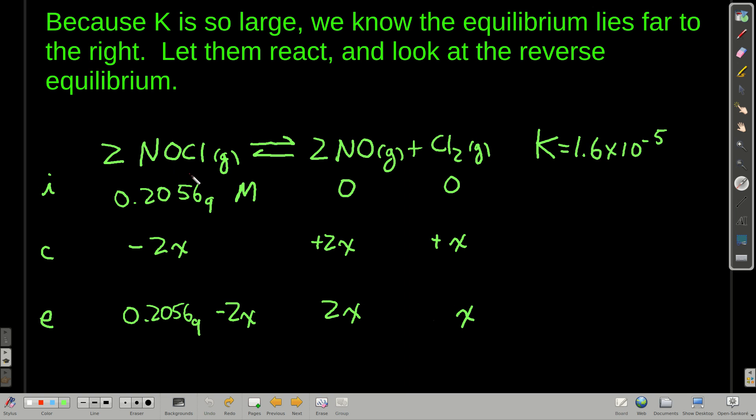Now we flip it back around, and we say we're going to let this decompose and make our products. Now our k, once more, is 1.6 times 10 to the minus fifth. And we start out, okay, now we set up our ice table. Initially, we have this much of this, zero and zero, minus two because of this two, minus two x, because of this two plus two x. There's one here, so just plus x. And at equilibrium, we have these amounts.